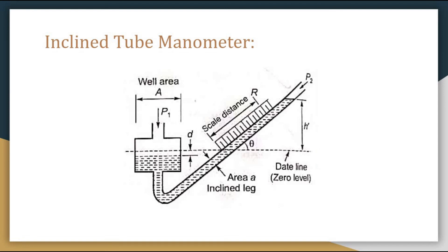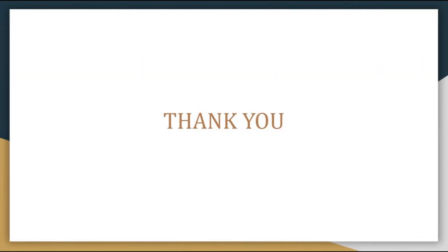In the next lecture, we will discuss high pressure measurements, which includes C-type Bourdon tube, spiral type Bourdon tube, bellows, diaphragms, etc. Please stay tuned and wait for the next lecture. Thank you, have a nice day.